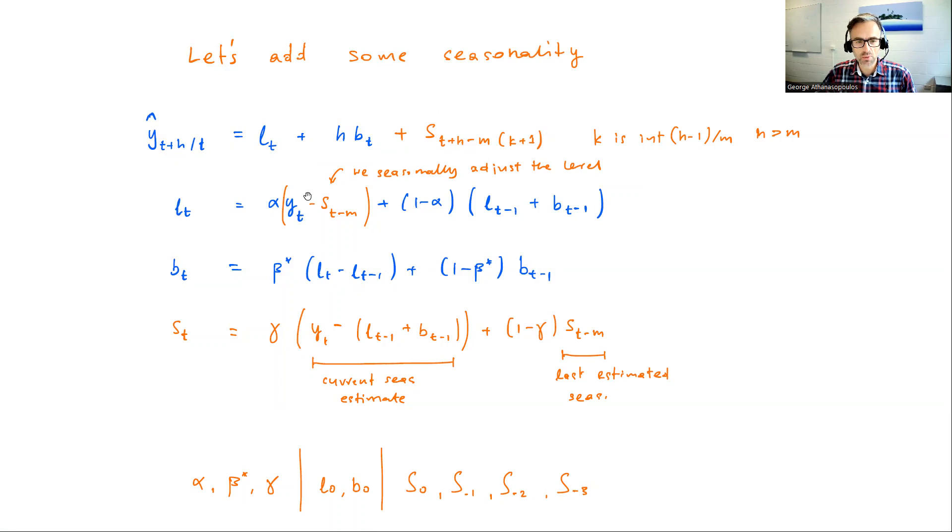Then in the level equation, what we do is we seasonally adjust the data we see by that seasonal component. And basically we add a third smoothing equation to account for the seasonal component. Now this seasonal component is a weighted average, again, a convex combination of the current seasonal estimate, so YT minus the level plus trend, plus the linear combination of that with the last estimated seasonal component we have seen.